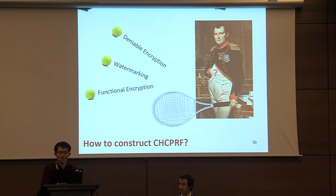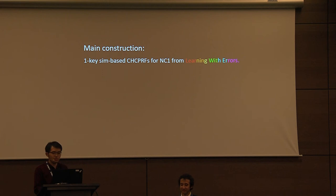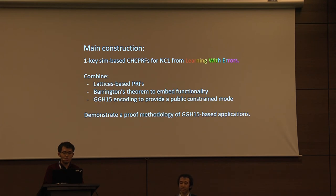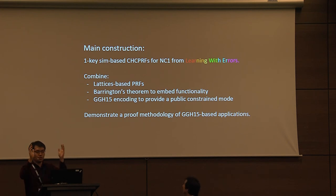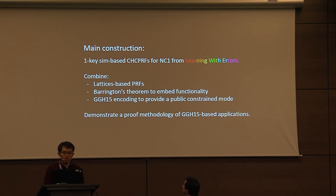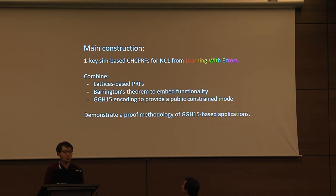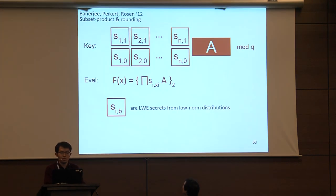Our main construction is a CHC PRF for NC1 from LWE. Our technique combines two ingredients: starting from the original lattice-based PRF, we use Barrington's theorem to embed functionality inside the key, and we use the GGH15 multilinear map mechanism to provide a meaningful constraint public mode. This demonstrates a positive side of GGH15-based applications with concrete security.